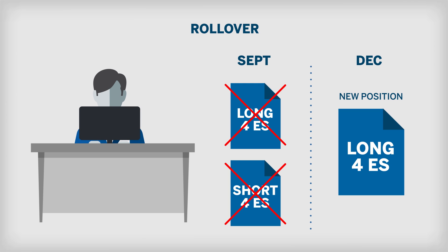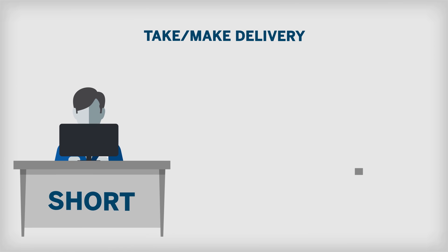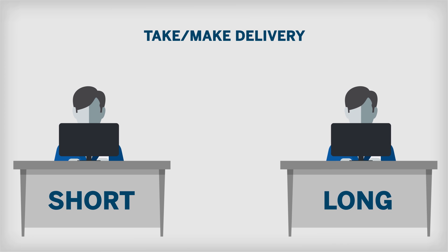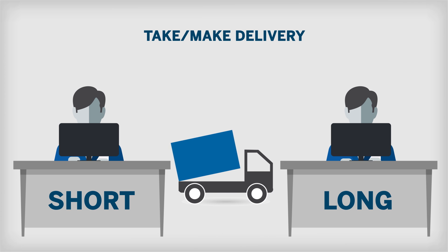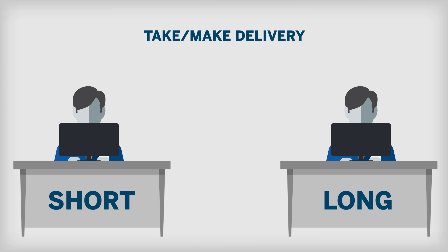If a trader has not offset or rolled his position prior to contract expiration, the contract will expire and proceed to settlement. At this point, a trader with a short position will be obligated to deliver the underlying asset under the terms of the original contract. In some markets this will take the form of physical delivery, and in other markets will be settled through a cash delivery.